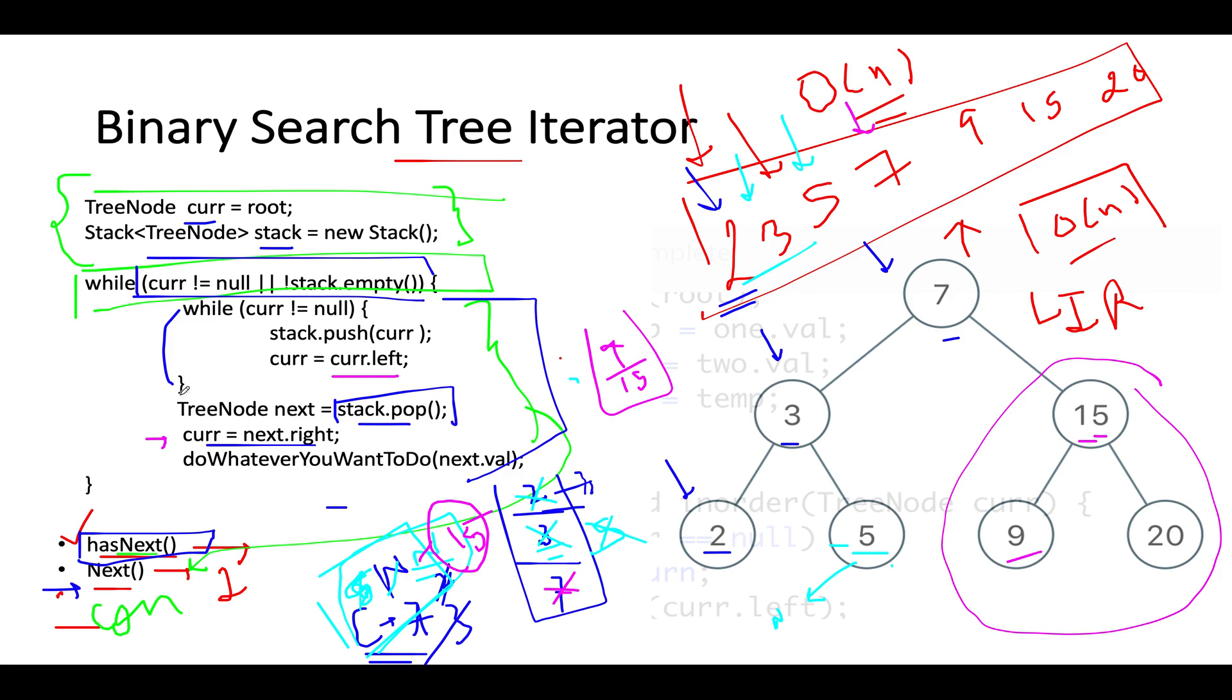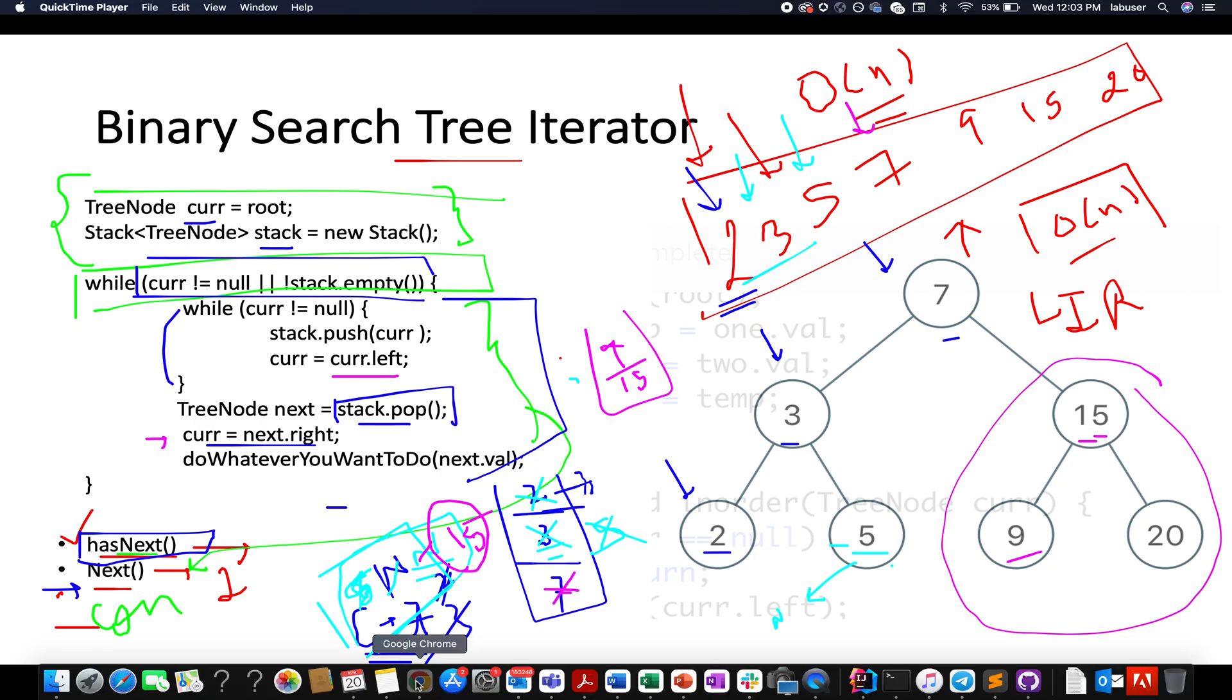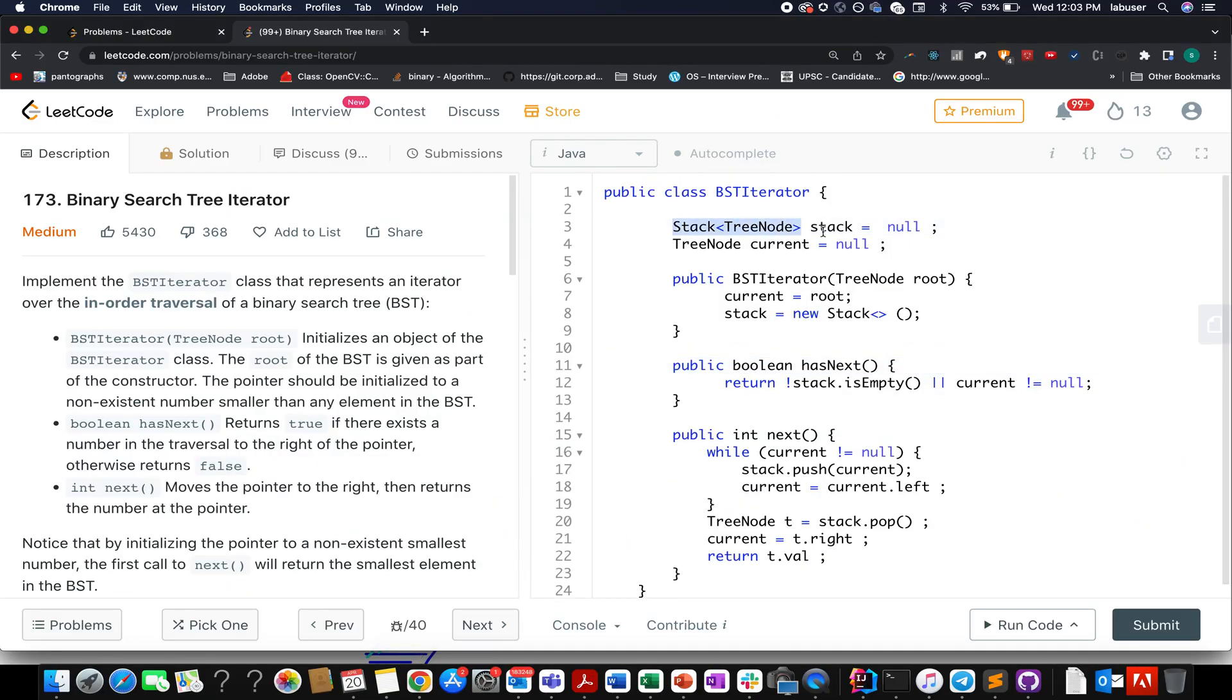To conclude it further, let's quickly walk through the coding section and I'll exactly follow the same steps as I just talked here. So here is the code for it. Here I've created one stack and one current node. I have initialized it over here. My current now points to root and my stack has been initialized to new stack as I talked in the presentation as well.